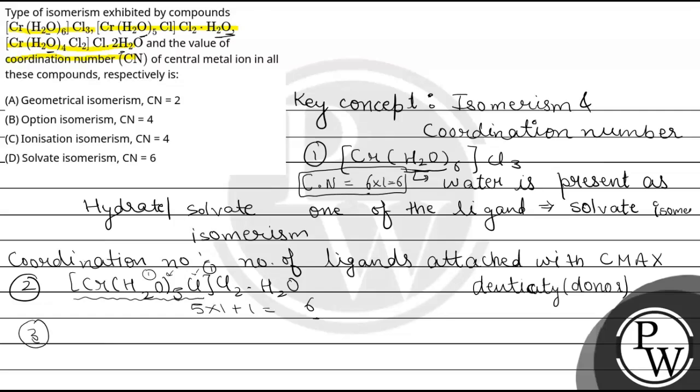Now, let's come to the third compound, Cr(H2O)4Cl2·Cl·2H2O. Four water, two chlorine. Again, four plus two, that is six. That means six ligands are attached to it, so the coordination number is six because the denticity is one.